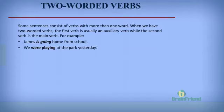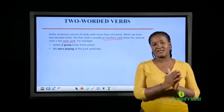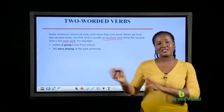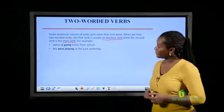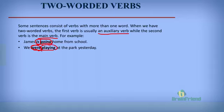We also have two-worded verbs. When we have two-worded verbs, the first verb is usually an auxiliary verb while the second verb is the main verb. For example, 'James is going home from school' — 'is' is the auxiliary verb and 'going' is the main verb. 'We were playing at the park yesterday' — 'were' is the auxiliary verb and 'playing' is the main verb. So when you have two-worded verbs, the first one is the auxiliary verb and the next one is the main verb.